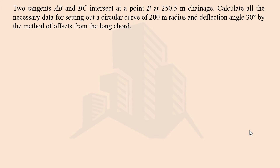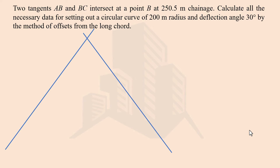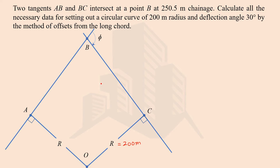Let's draw this first so we can have a better understanding of the problem. We have line AB as the back tangent and BC as the forward tangent, with point of intersection at B. Point A is the start of the curve and C is the end point. We can draw the center with the radius of 200 meters from the start or end point. The deflection angle between AB and BC is 30 degrees, and the straight distance from A to C is the long chord.